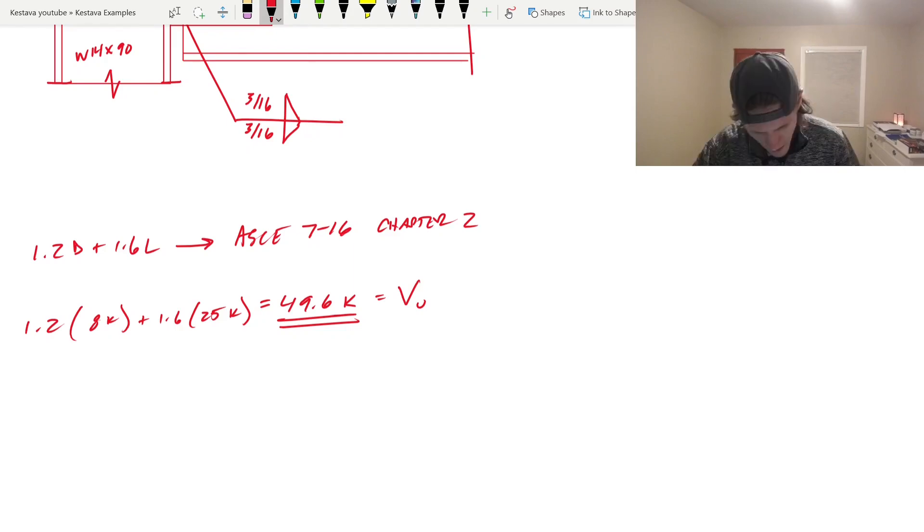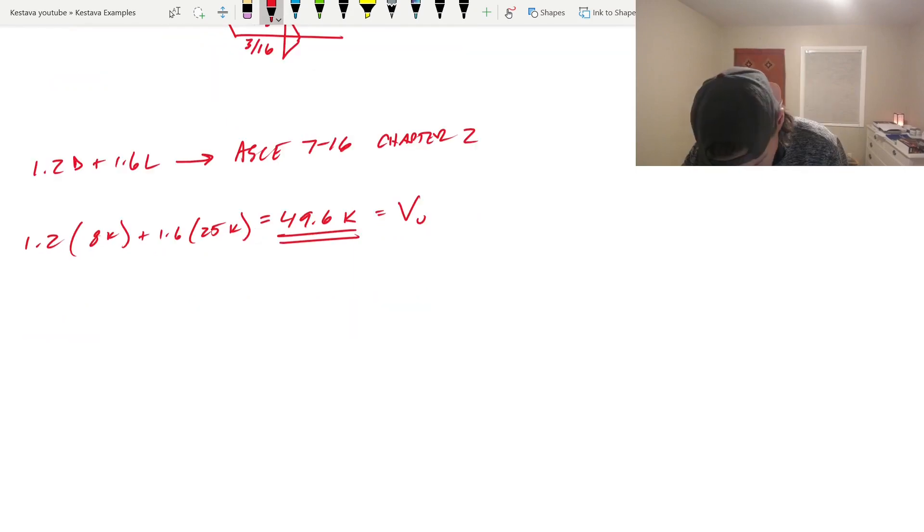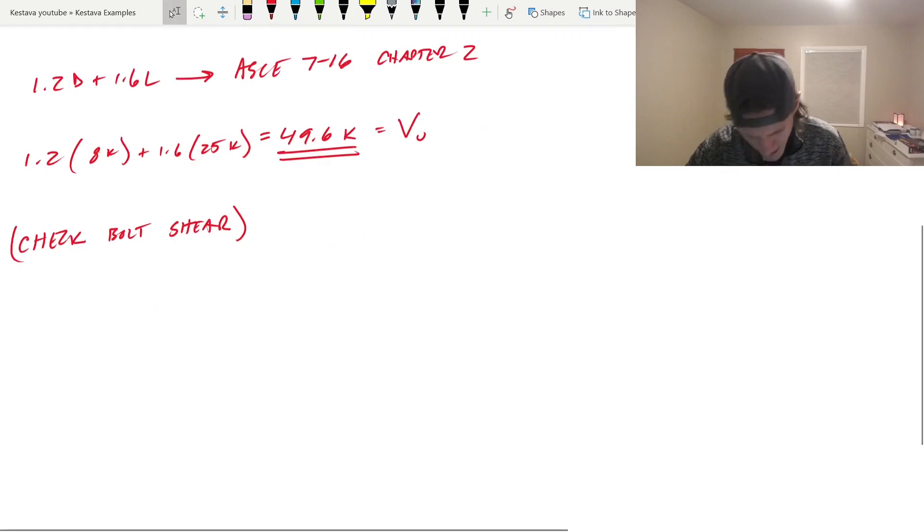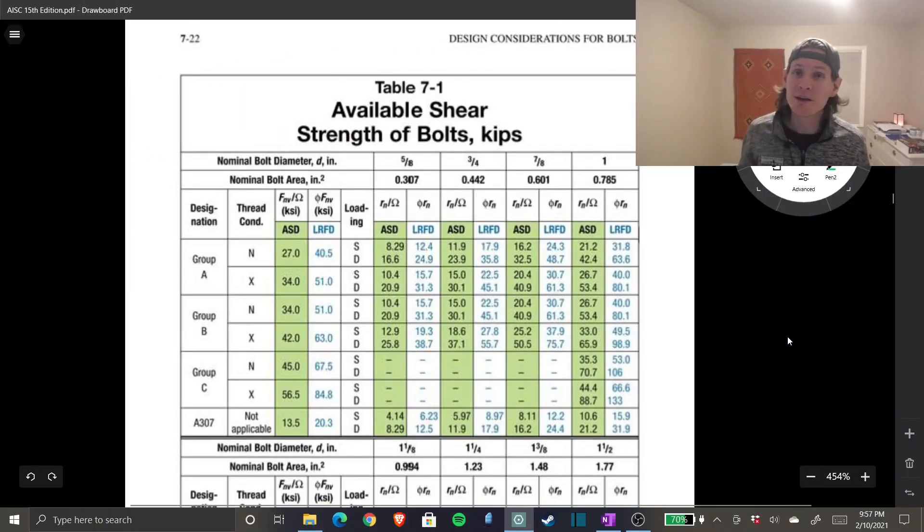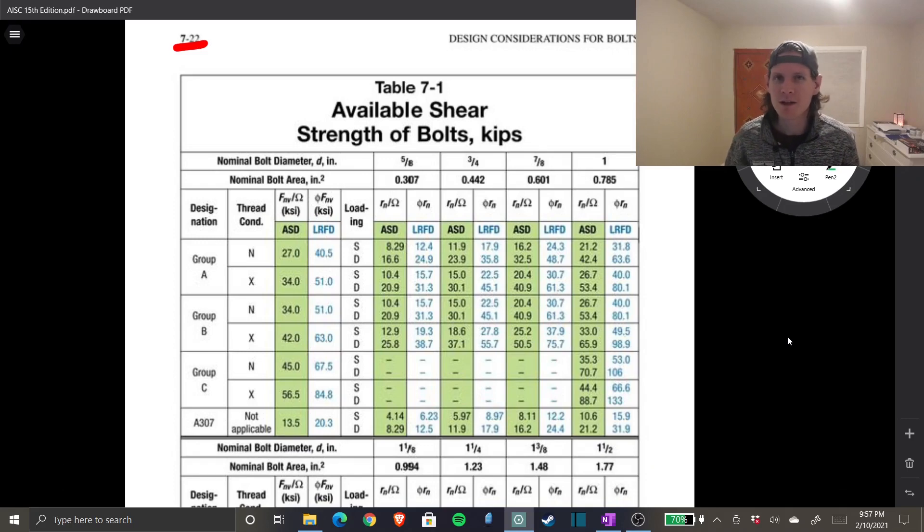Let's start checking. First, bolt shear. This one is pretty straightforward so let's just cross it off the list early. We're now going to jump over to AISC steel manual. Here we are, available bolt shear, this is on page 7-22, table 7-1. We already have this tabbed for the PE exam so we flipped here in two seconds.